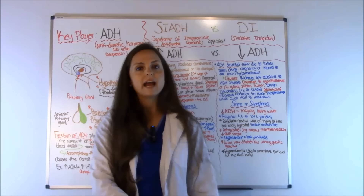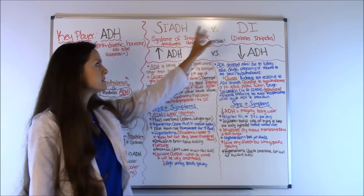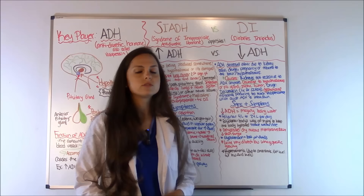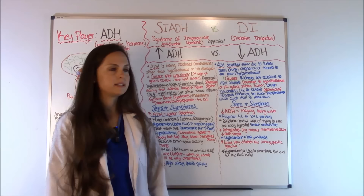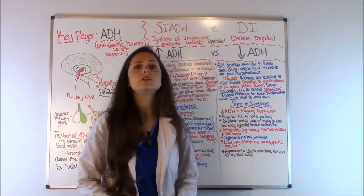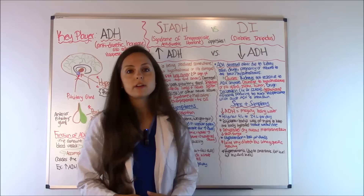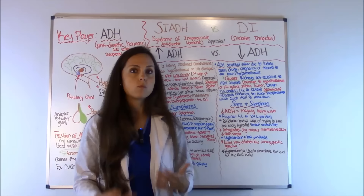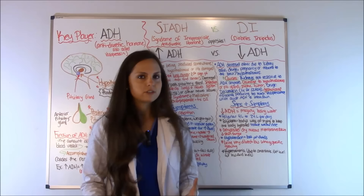Now let's flip over and look at the opposite — diabetes insipidus. These two conditions present opposite to each other. In DI, the patient doesn't have enough anti-diuretic hormone, so their kidneys lose a lot of water through the renal tubules. They urinate up to 24 liters of fluid a day, which is a lot. To compensate, they'll have polydipsia — an increase in drinking. They'll crave water and ice because they've lost so much water, drinking constantly to try to hydrate themselves. But they can't stay hydrated because they're losing so much fluid through the kidneys.